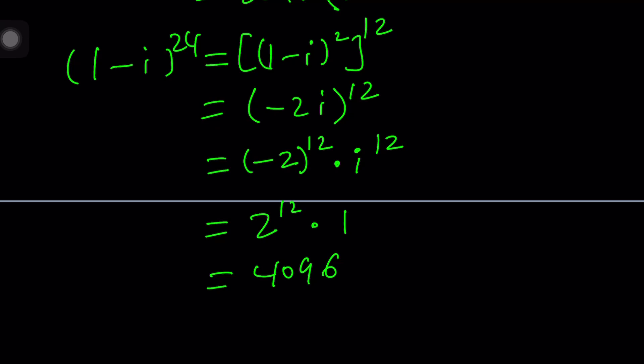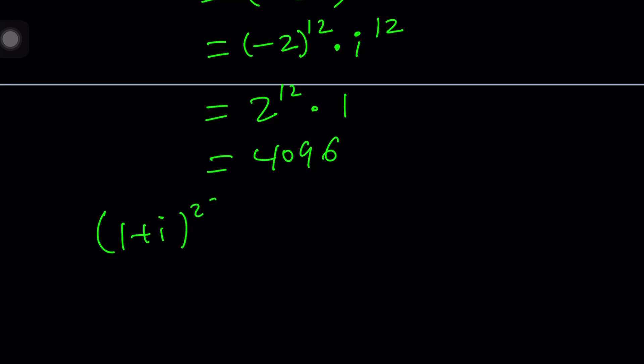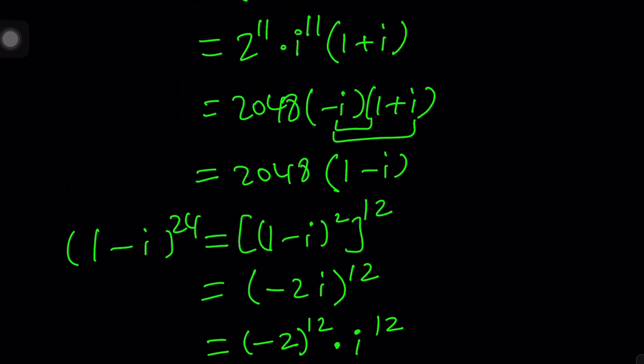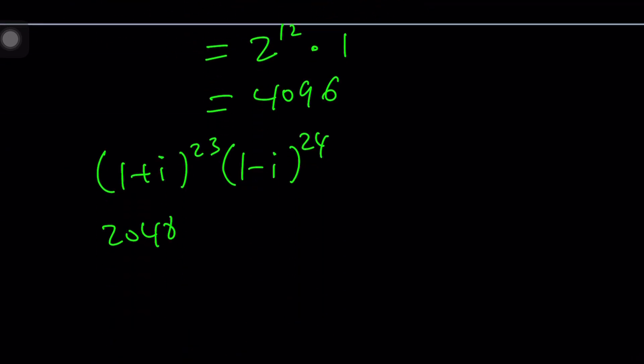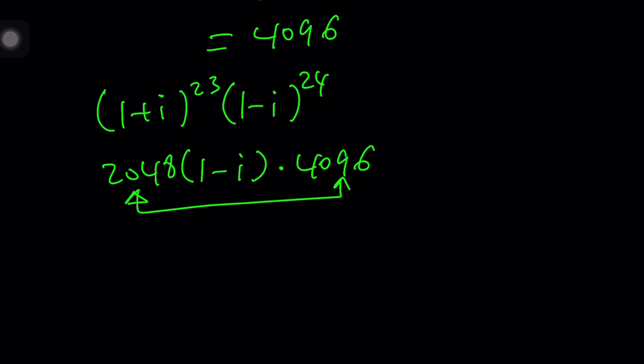Now, we need to put these two things together. We're supposed to multiply this by that. (1 + i) to the power of 23 is 2,048 times (1 - i). And this one is just 4,096. We're going to multiply the numbers. We're going to get 8,388,608 multiplied by (1 - i). If you want to distribute, that's fine. You can leave it like that.